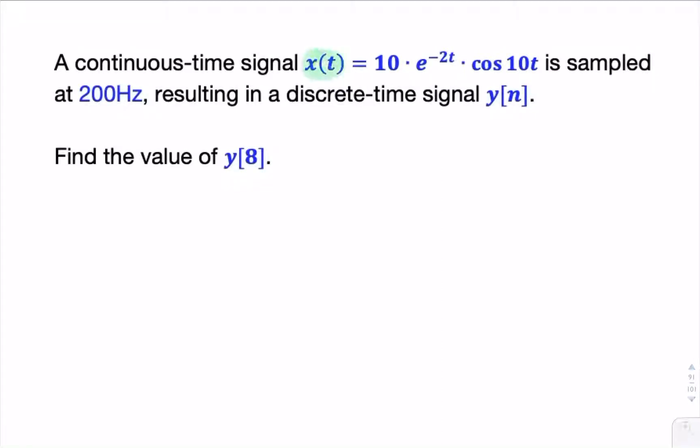In this question, we're given a continuous time signal. We're told that it's sampled, and we're asked about the discrete time signal. In particular, we're asked about the ninth sample, y[8]. We're asked for that value.